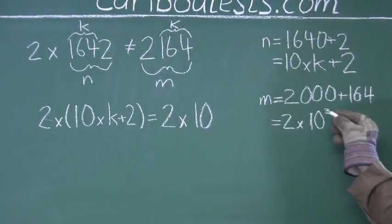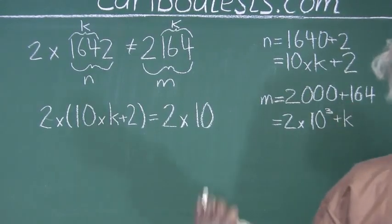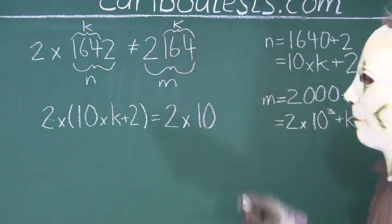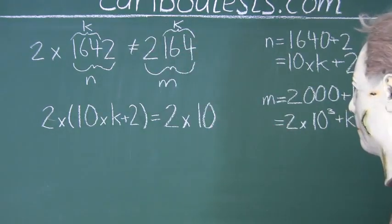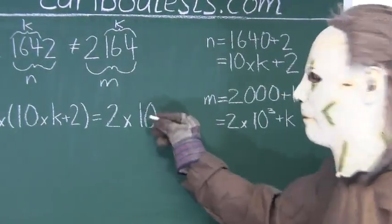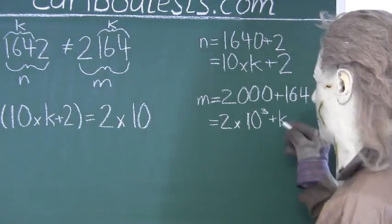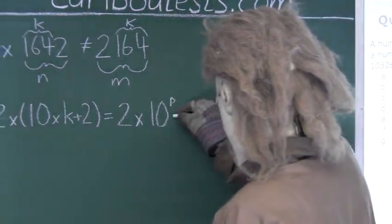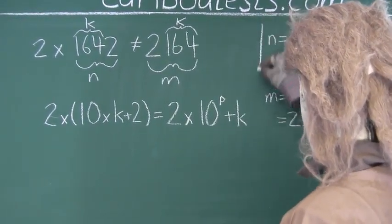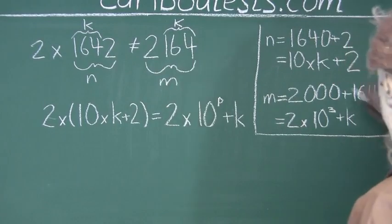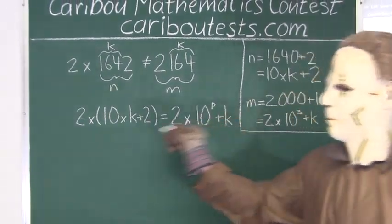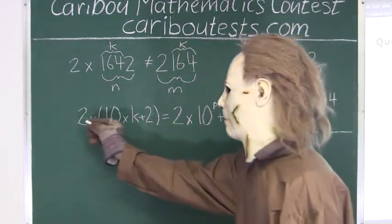Now instead of writing 3, we want to find something more general because we don't know the number of digits in the number. We don't know if there are 4 or 5 or 6 or however many. So instead of putting 3, we will put a variable p. So we have 2 times 10 to the power of p plus k.